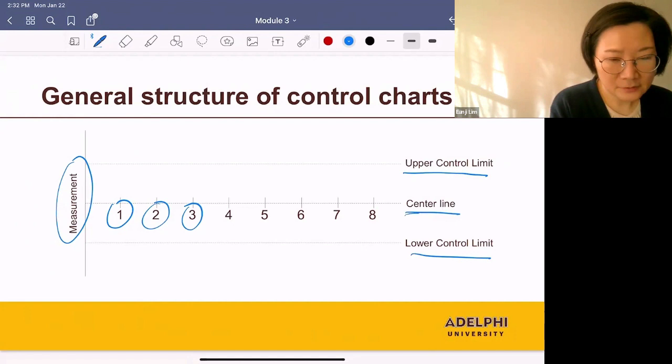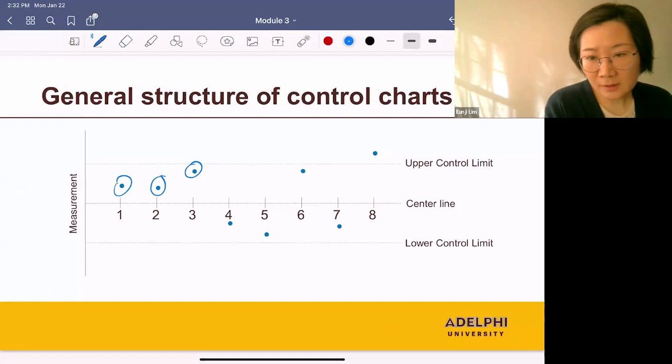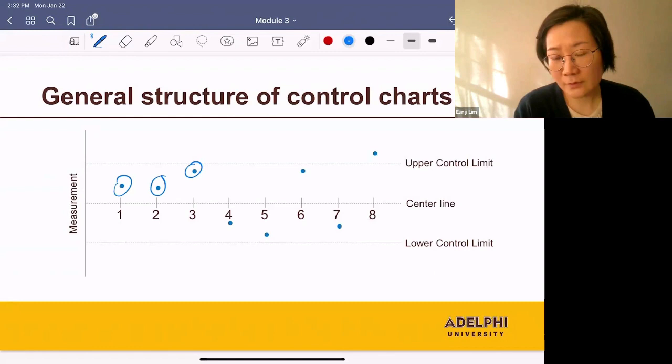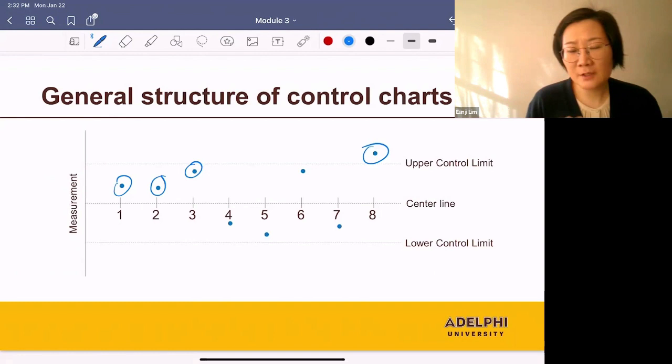Next, we plot the measurements over time. If all measurements are within the limits, the process is in control. If one or more are outside the limits, the process is out of control, meaning there's a special cause creating this variation that we need to identify and fix.